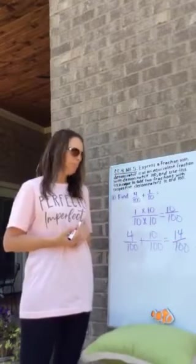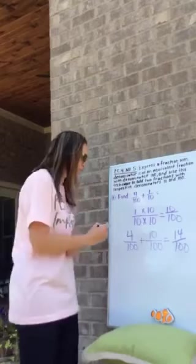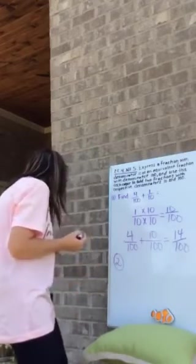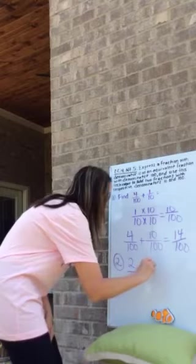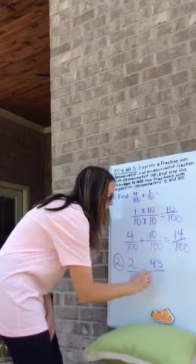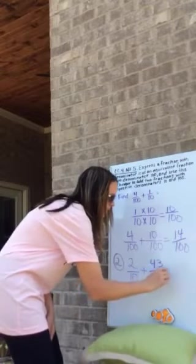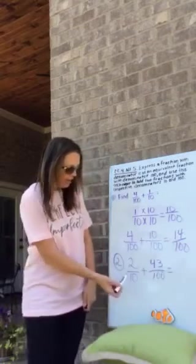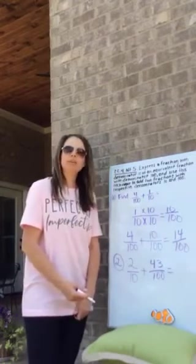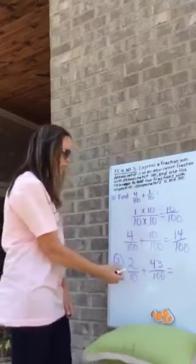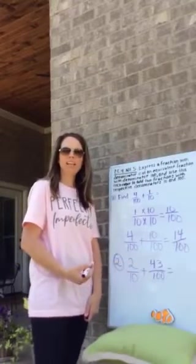Let's do another one — number two. Number two is two tenths plus forty-three hundredths. Again, we know that we cannot add fractions that do not have the same denominator, so we'll have to change two tenths to a fraction that has hundredths. We have to find an equivalent fraction for two tenths.